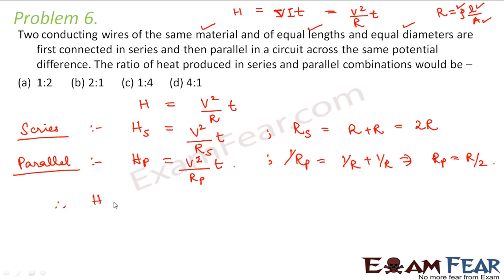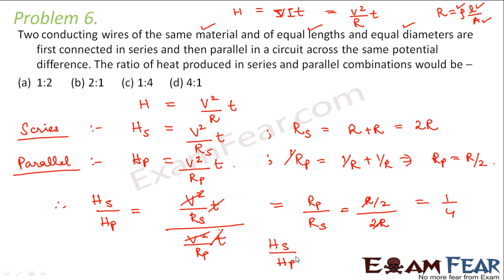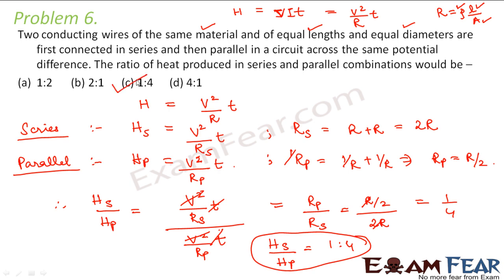Therefore, the ratio of heat produced in series to parallel combination equals V squared by RS into T divided by V squared by Rp into T. V squared and T cancel out, giving us Rp divided by RS. Now Rp is R by 2 divided by 2R, so R cancels and we get 1 by 4. So HS by HP equals 1 is to 4, meaning option C is the correct answer.